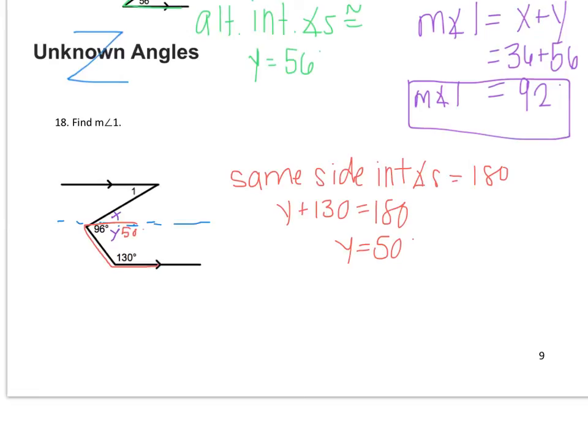So I'm going to write 50 right in here. Now in order to find X, I know that 50 and X give me a total value of 96, because that angle that I split up was 96 degrees in the first place.